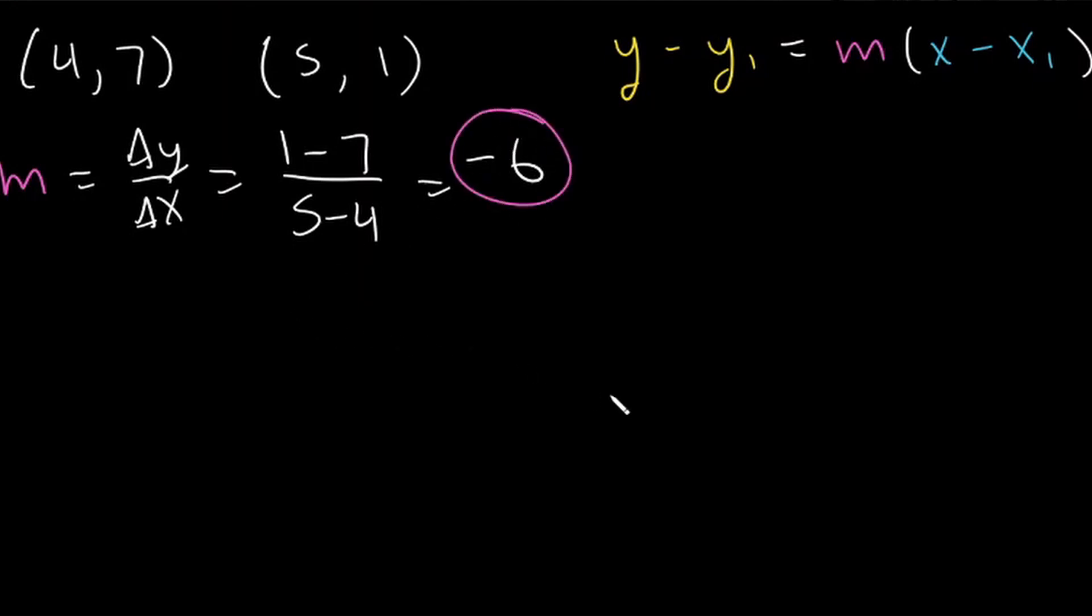So now we have a slope and two points, so we can actually use point-slope form to solve for this equation. Let's use this second point here, (5, 1), because it seems to have simpler numbers. Well, we will get the same answer both ways. So y minus our y value is 1, and then we set that equal to our slope, which is negative 6, and then multiply by x minus our x value, which is 5.